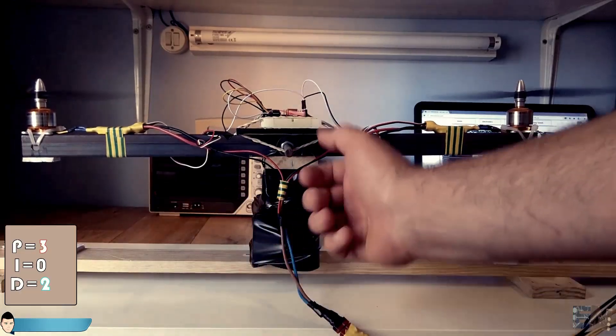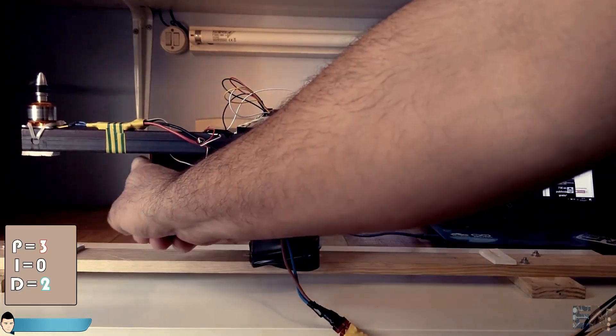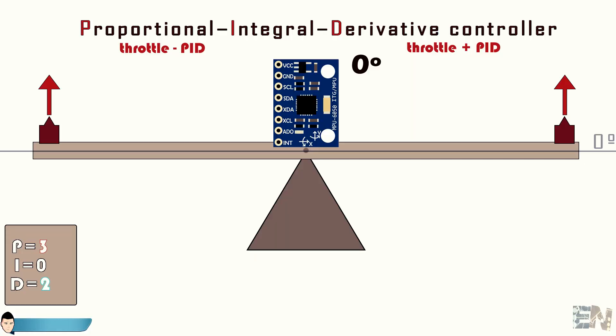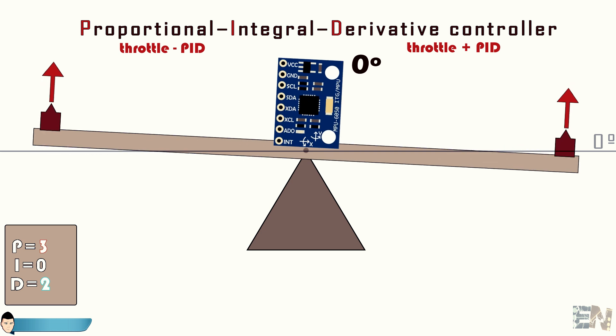Then what will the integral part add to the system? Well for very small angles the proportional constant won't affect anymore or the value will be very small. And if the metal bar is not moving the derivative constant won't affect neither. So the bar could get stabilized but not perfectly horizontal.